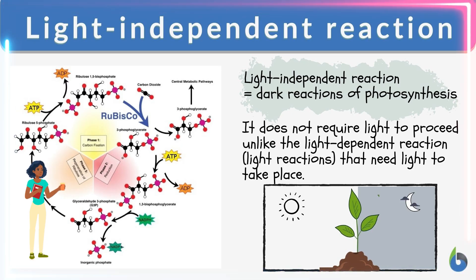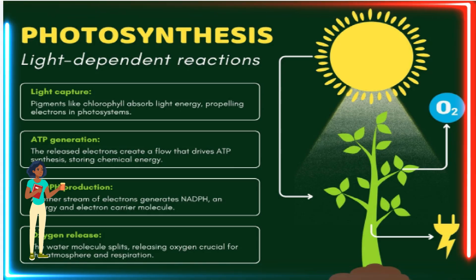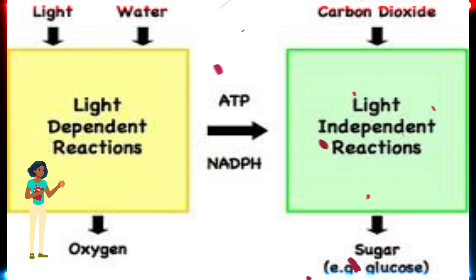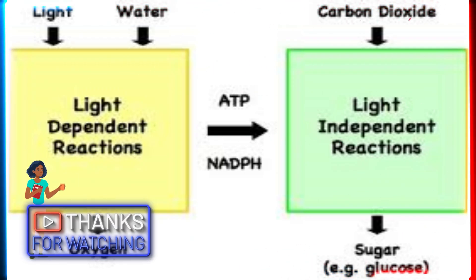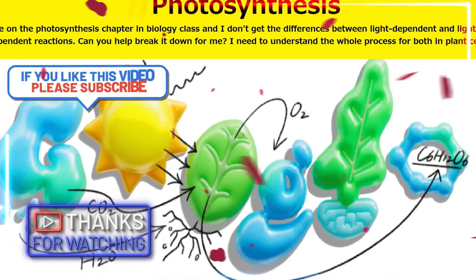The light-independent reactions occur in the stroma, where ATP and NADPH are used to fix carbon dioxide into sugars, such as glucose. Thanks for watching this video on photosynthesis Google Doodle.